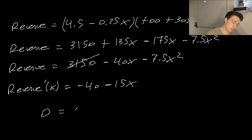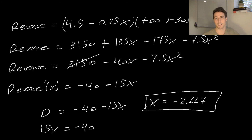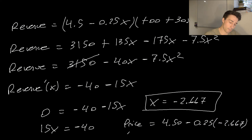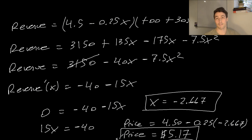Setting the derivative to zero: 0 equals negative 40 minus 15X. Solving for X: 15X equals negative 40, so X equals negative 40 divided by 15, which is negative 2.667. Since X is negative, we're actually going to have an increase in price. Plugging into the price formula: price equals 4.50 minus 0.25 times negative 2.667, which equals 4.50 plus 0.667, giving an optimal price of $5.17 to maximize revenue.